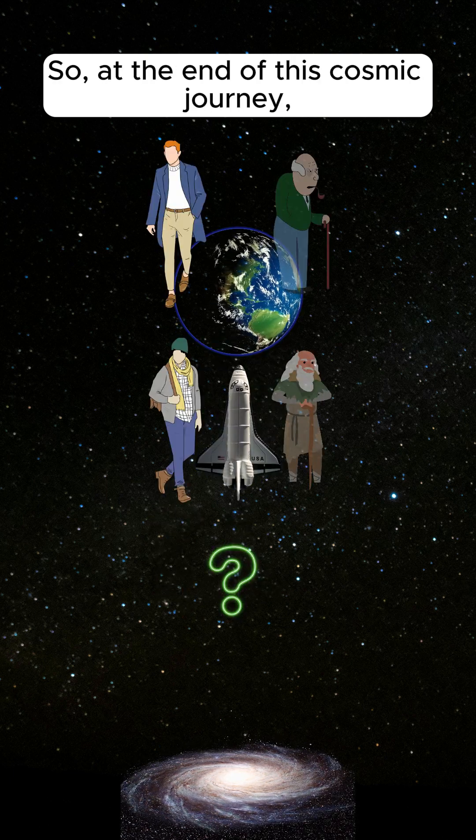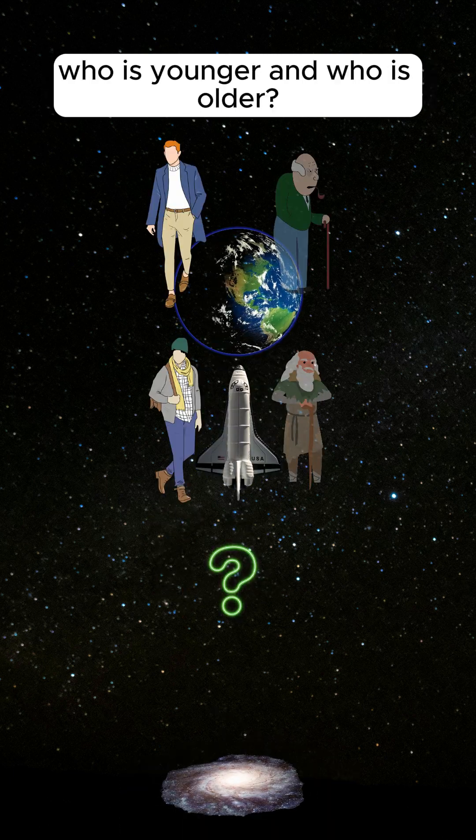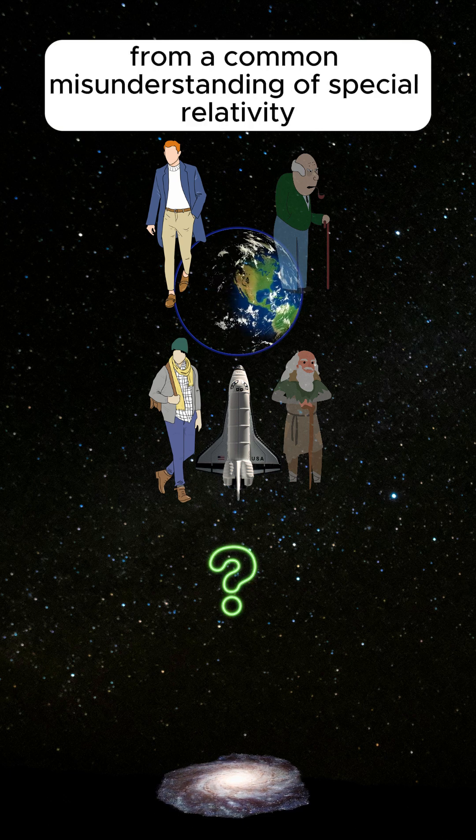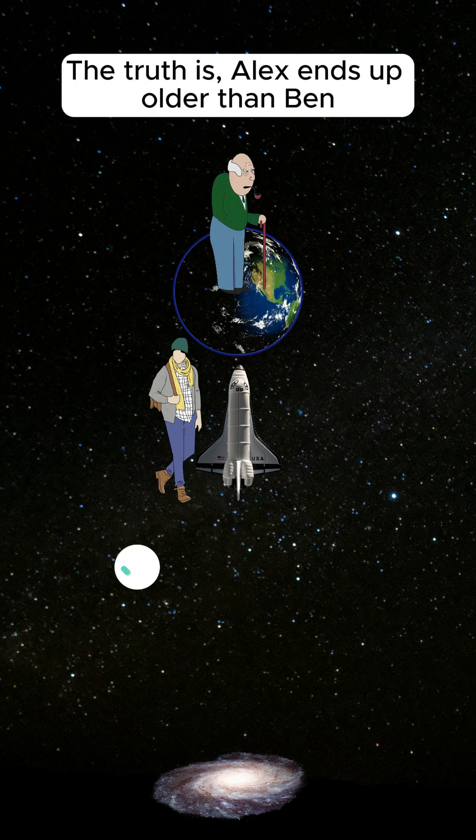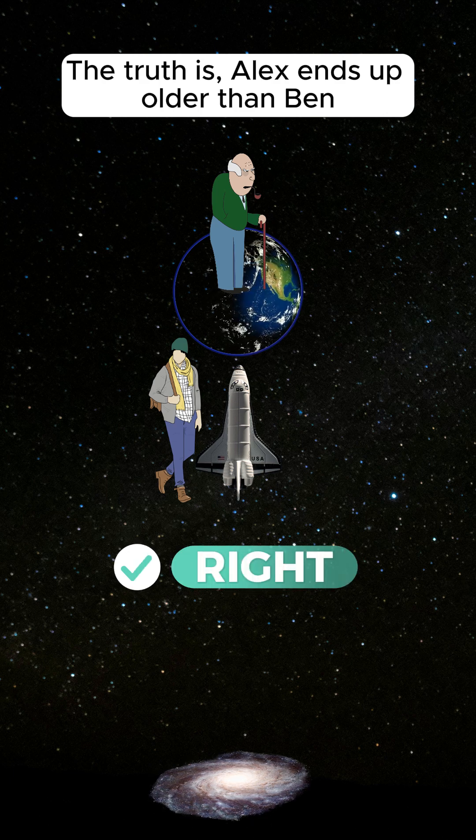So, at the end of this cosmic journey, who is younger and who is older? This question stems from a common misunderstanding of special relativity. The truth is, Alex ends up older than Ben,